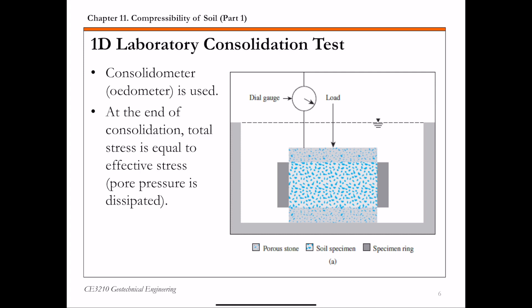The 1D lab consolidation test procedure was first suggested by Karl Terzaghi. So the schematic diagram of this test is shown on this slide. So in the diagram you can see there is a soil specimen that is placed inside a metal ring. And there are two porous stones, one at the top and the other one at the bottom of the specimen. So during the test, you place some load on this specimen. So you compress the soil specimen and at the same time you have some gauge to measure the deformation delta H.